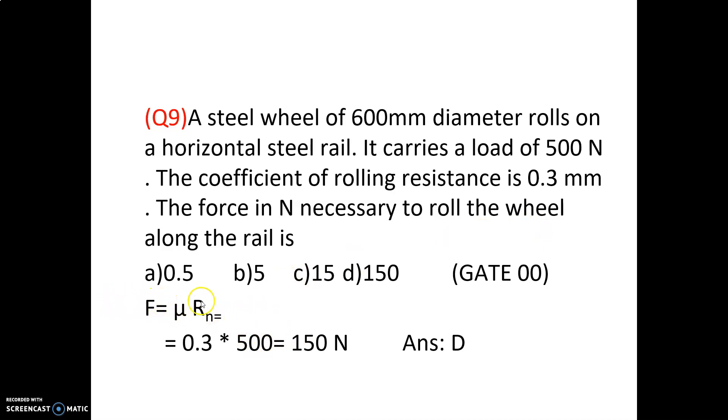Friction force F = μ × N. With μ (coefficient of friction) = 0.3 and load = 500 N: F = 0.3 × 500 = 150 N. So option D is correct — 150 Newton.